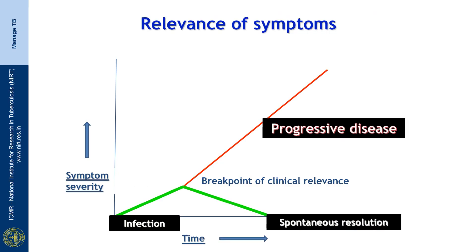From infection to disease, it is almost like a continuum, and this continuum is where the symptoms come in. If you have symptoms which are initially very mild, this may just be a marker of infection which can undergo spontaneous resolution. However, when this infection continues to produce a disease or pathology, there would be a progressive increase in symptoms — and that is the relevance of symptoms to differentiate between infection and progressive disease.